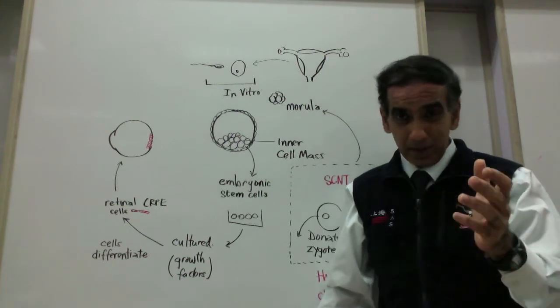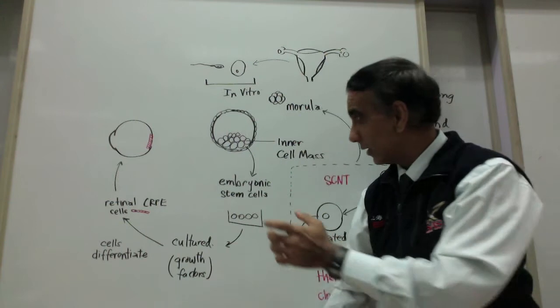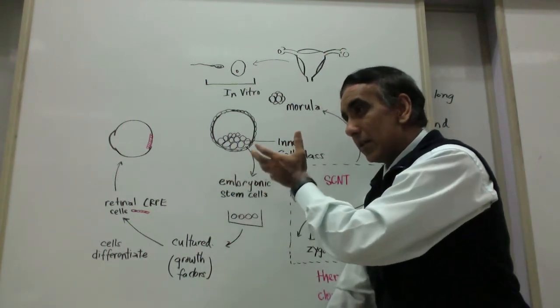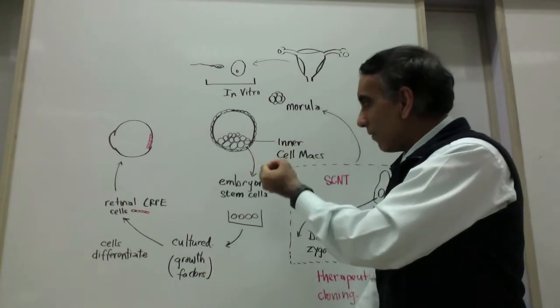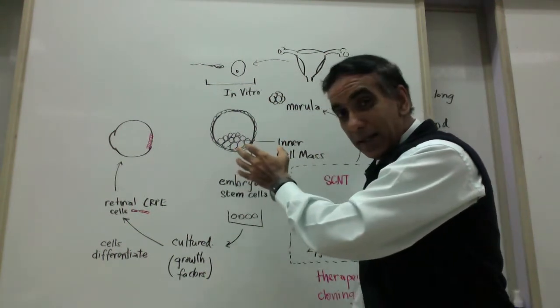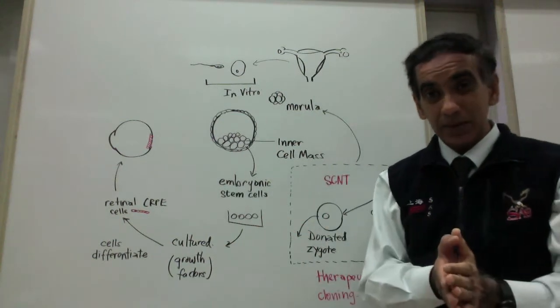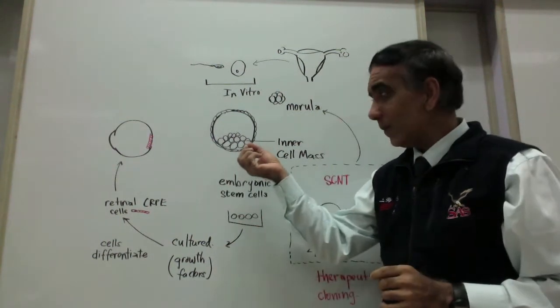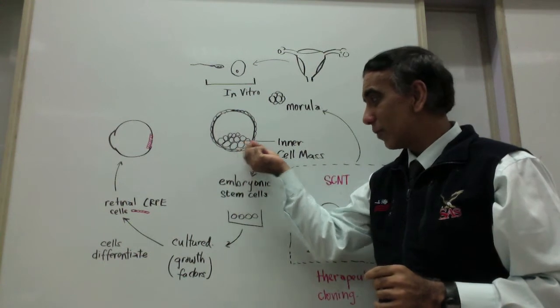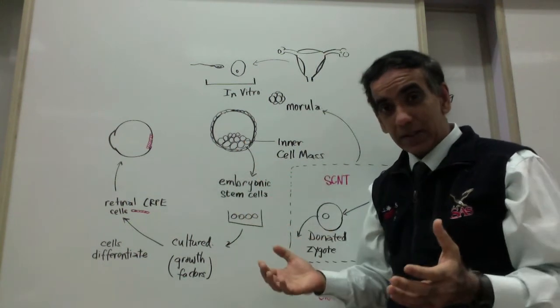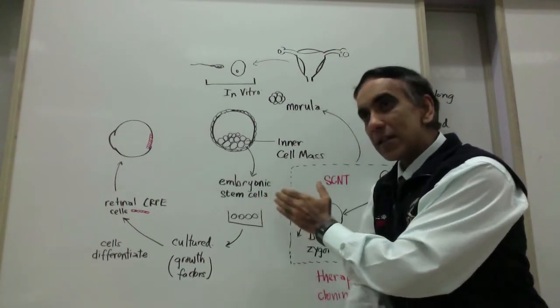When we speak of embryonic stem cells, it is really these cells of the inner cell mass of the blastocyst that we speak of. For they have the capacity to develop and to differentiate into all of the cell types of the human body. And if an embryonic stem cell is removed and put into the right culture, it will propagate itself and remain in the embryonic stem cell stage.